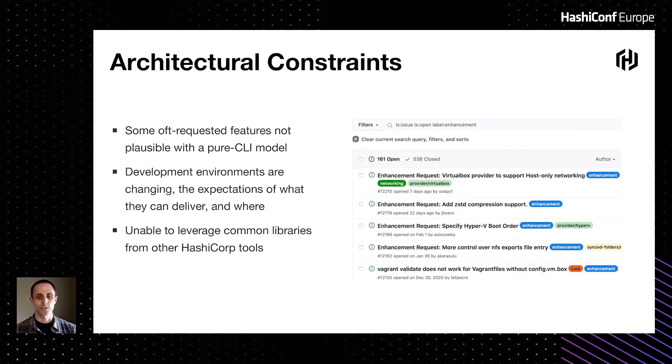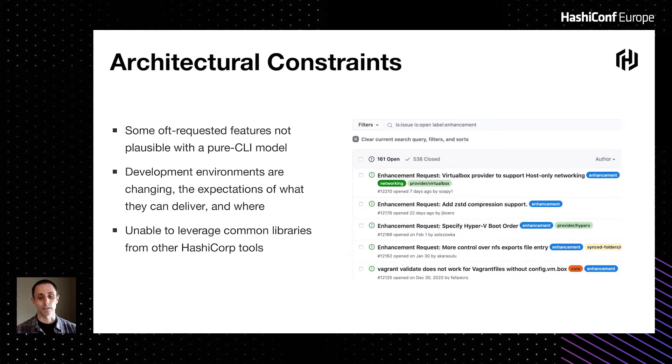There are also some architectural constraints at play. Some often-requested features are either not possible or require difficult workarounds. These include GUI interfaces for interacting with guests, remote system support for Vagrant hosts, and sharing Vagrant projects themselves. Vagrant is not architecturally well-positioned to solve these new concerns in its current state — and that's not surprising, since Vagrant was designed 10 years ago to be a single-user CLI tool. Since then, a lot of technology has changed.